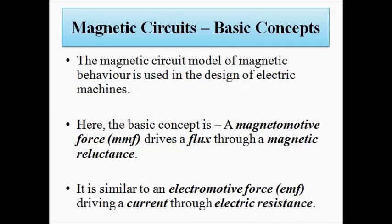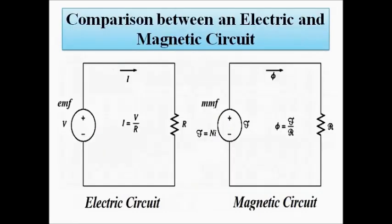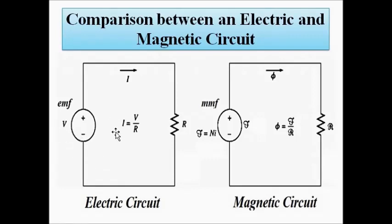In an electrical circuit, a voltage or EMF V is connected across a resistor having resistance value R. Because of this circuit connection, when the circuit is switched on, a current equal to V divided by R will flow through the circuit. The important parameters here are the EMF V, the circuit current I, and the resistance R.